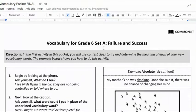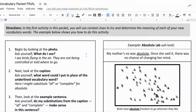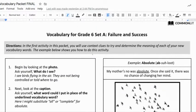This is your packet for today. I'm going to go through each of the activities, just the first examples or just the beginning of each one. The first activity is your chance to use context clues. The instructions are: in the first activity of this packet, you will use context clues to try and determine the meaning of each of your new vocabulary words. The example below shows how to do this activity.